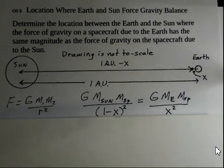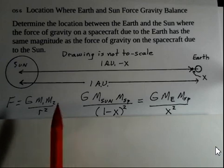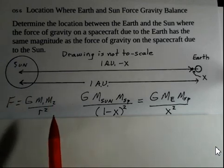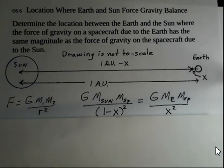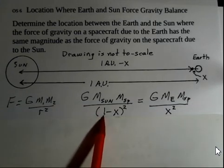So, for the case of the sun on the spacecraft, capital G, mass of the sun, mass of the spacecraft, and the distance from the center of the sun to the center of the spacecraft is 1 minus x squared. Again, this 1 here is an astronomical unit.